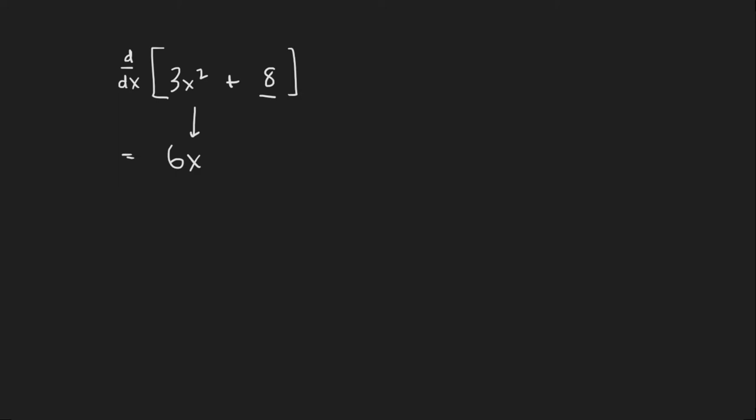So when we took the derivative we went from 3x squared plus 8 down to 6x. When we find the anti-derivative we're basically just reversing this process. So in other words we're going from 6x back up to 3x squared.